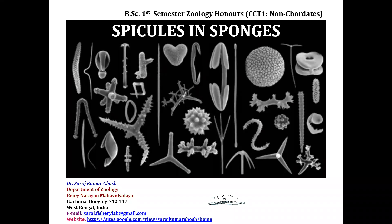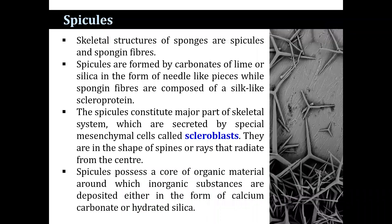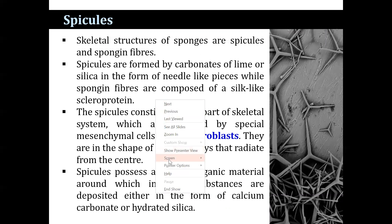Welcome back, dear students. Today I am going to discuss the topic of spicules in sponges. The skeletal structures of sponges are spicules and spongin fibres. Spicules are formed by carbonate of lime or silica in the form of needle-like structures, while spongin fibres are composed of silk-like scleroproteins. Spicules constitute the major part of the skeletal system and are secreted by a special type of mesenchyme cell called the scleroblast.